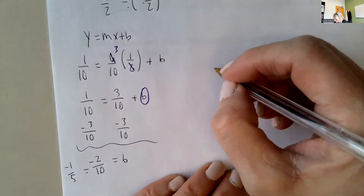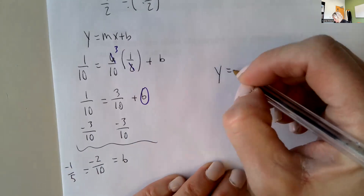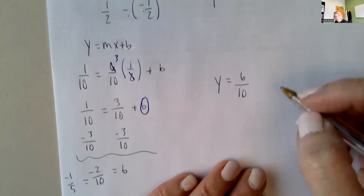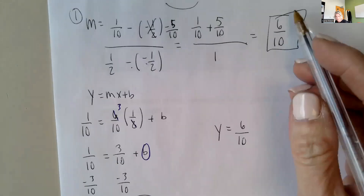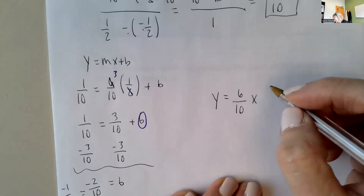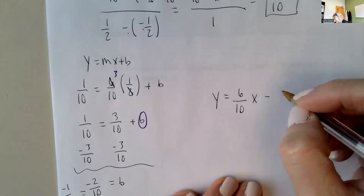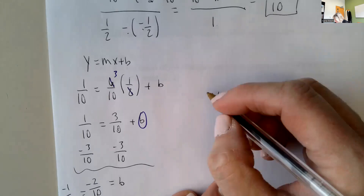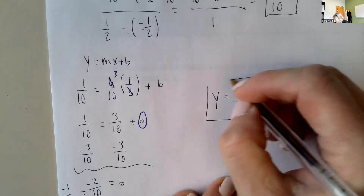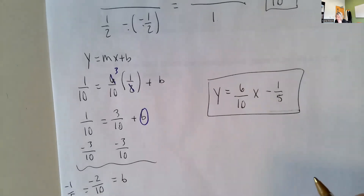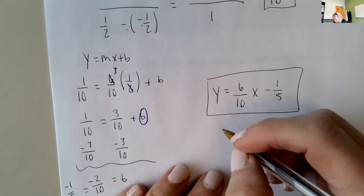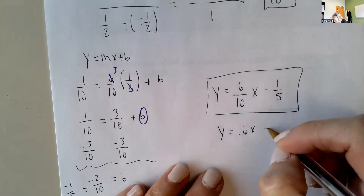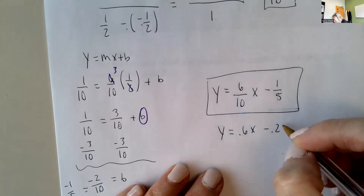So my equation of the line is y equals six-tenths x minus one-fifth. In decimal form, that's y equals 0.6x minus 0.2.